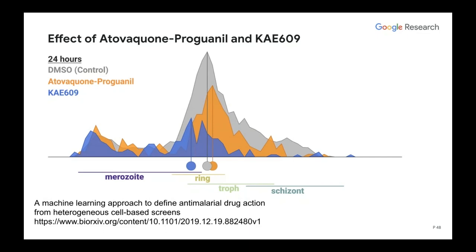Why do we want this life-cycle model? Because drugs that operate differently may affect the parasite at different life-cycle stages. Looking at histograms of parasite stage distributions: the gray control shows a big spike at the ring stage; atovaquone-proguanil shifts the distribution slightly. But a prospective molecule called KAE-609 seems to really prevent the parasite from entering the schizont stage — a much more distinct effect. This is exactly the kind of mechanistic diversity we're trying to find.